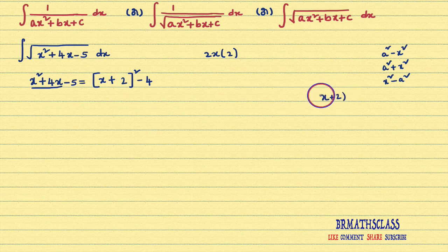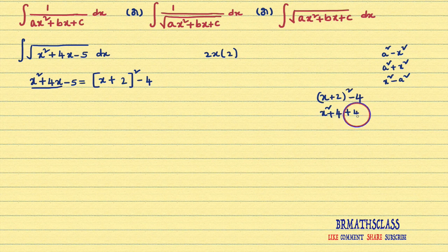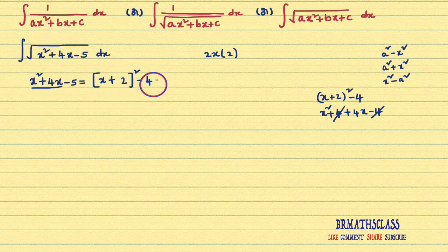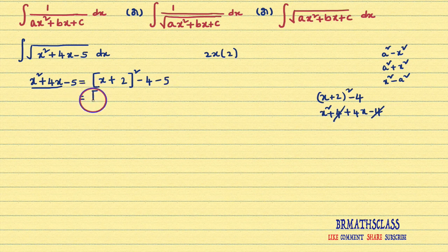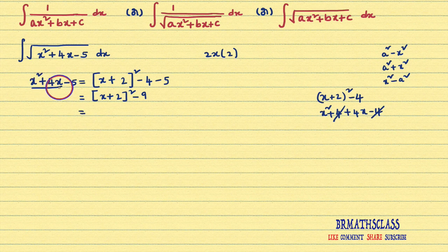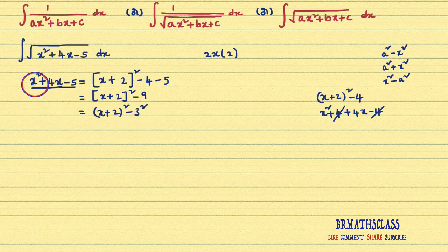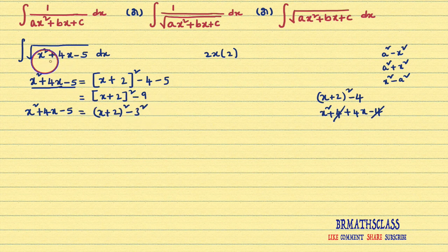If you want, you can check: (x plus 2)² minus 4. Expand using the a plus b whole square formula — a² plus b² plus 2ab minus 4. You see, plus 4 minus 4 will get cancelled, and you get x² plus 4x only. So x² plus 4x we can write like this. What is remaining? Minus 5 is remaining. That gives us (x plus 2)² minus 4 minus 5, which is (x plus 2)² minus 9. Writing 9 as 3², we get x² plus 4x minus 5 equals (x plus 2)² minus 3². Now in this integral, in place of x² plus 4x minus 5, I will write this expression.